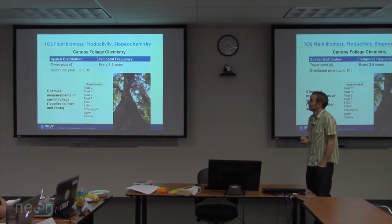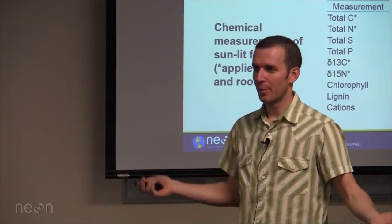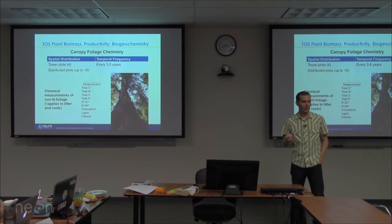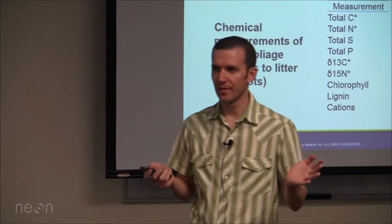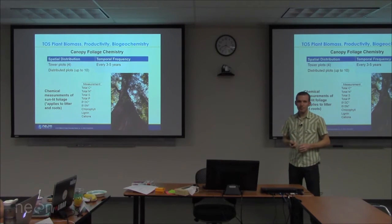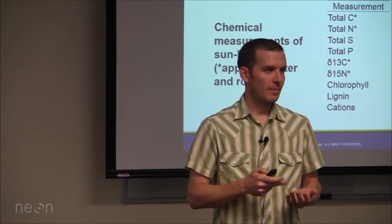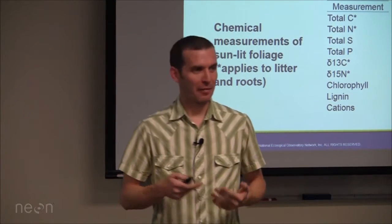For canopy foliage chemistry: we work at four tower plots and up to ten distributed plots, with measurements made every three to five years — currently planned at five years, with a push to get NSF approval for three years. The idea is these are frequent but not annual calibrations of the AOP, with the understanding that AOP flies every year providing annual reflectance data. Ground measurements don't need to be annual since we'll have this proxy variable, but we want to verify that relationships between wet chemistry and reflectance measurements aren't changing through time.